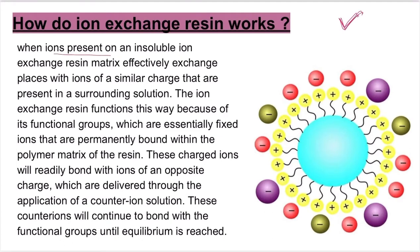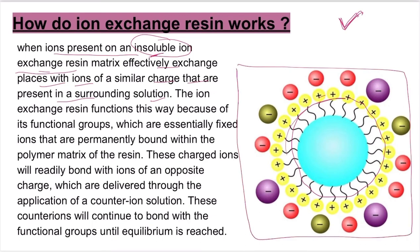When ions present on an insoluble ion exchange resin — which is our ion exchange resin, and it has the property that it needs to be insoluble — they effectively exchange places with ions of similar charge that are present in the surrounding solution. This is our cation exchange resin, because you can see that it has a positive charge. In the solution, the opposite, negative ions will be attached and exchanged, where they will be removed.